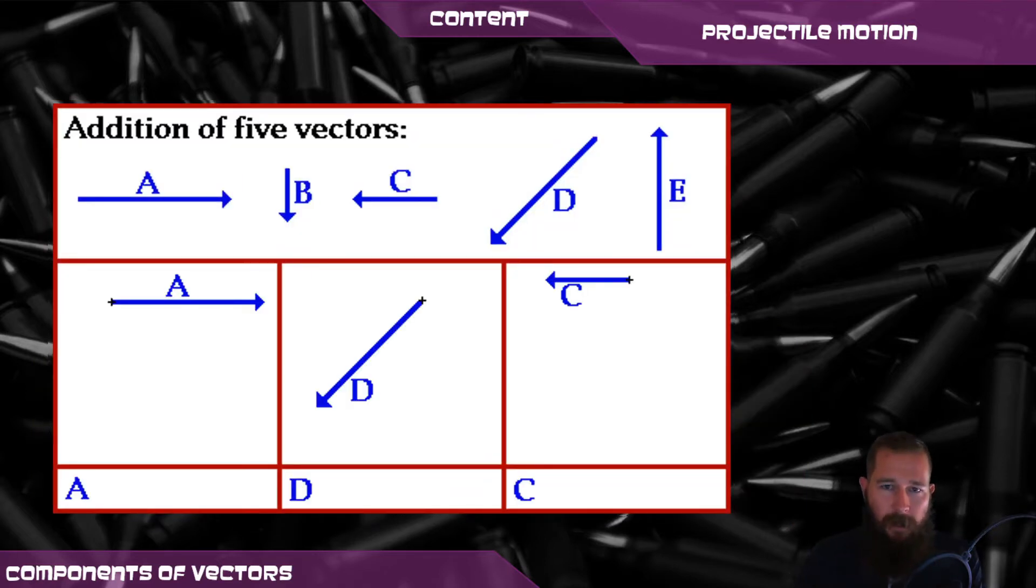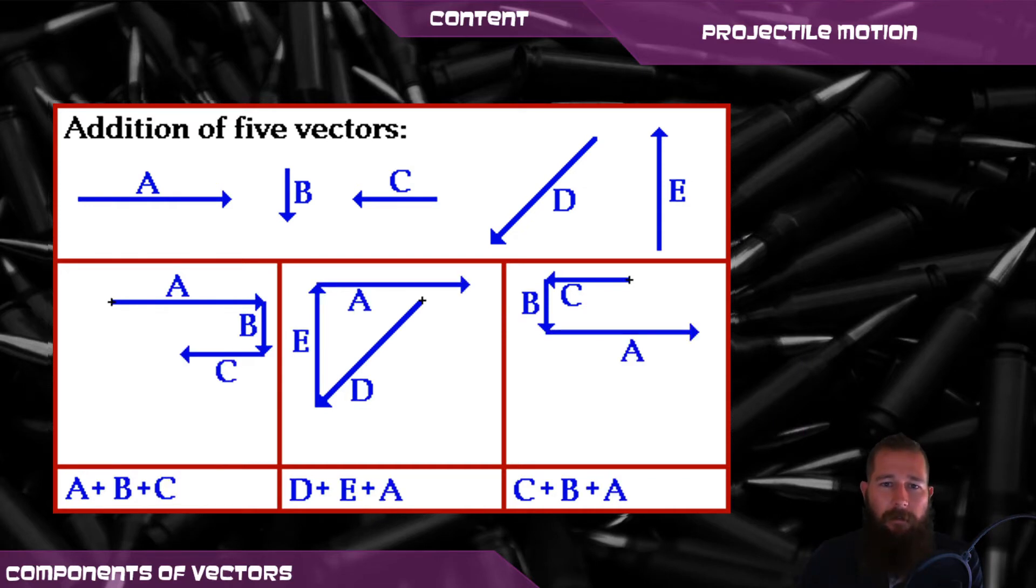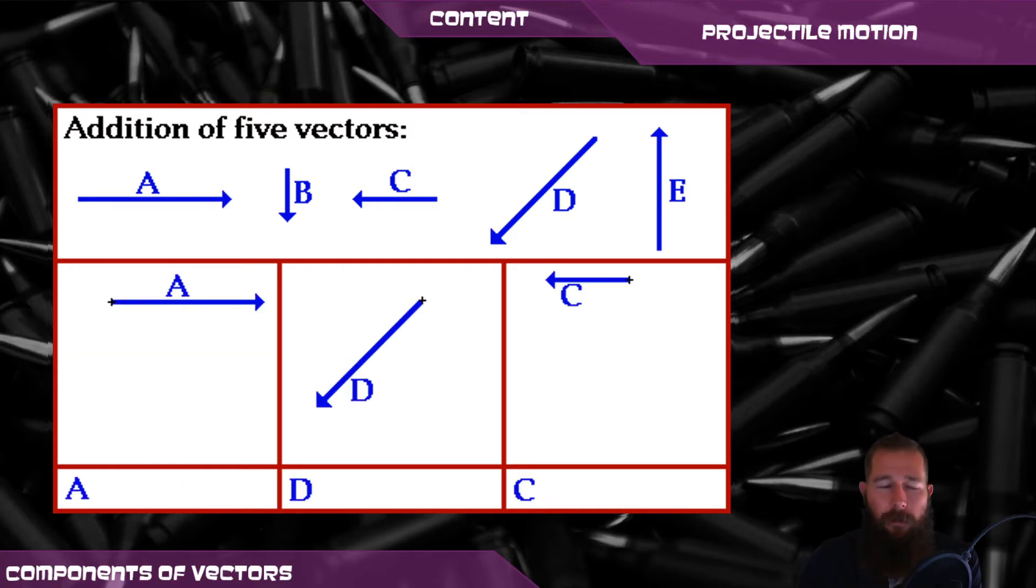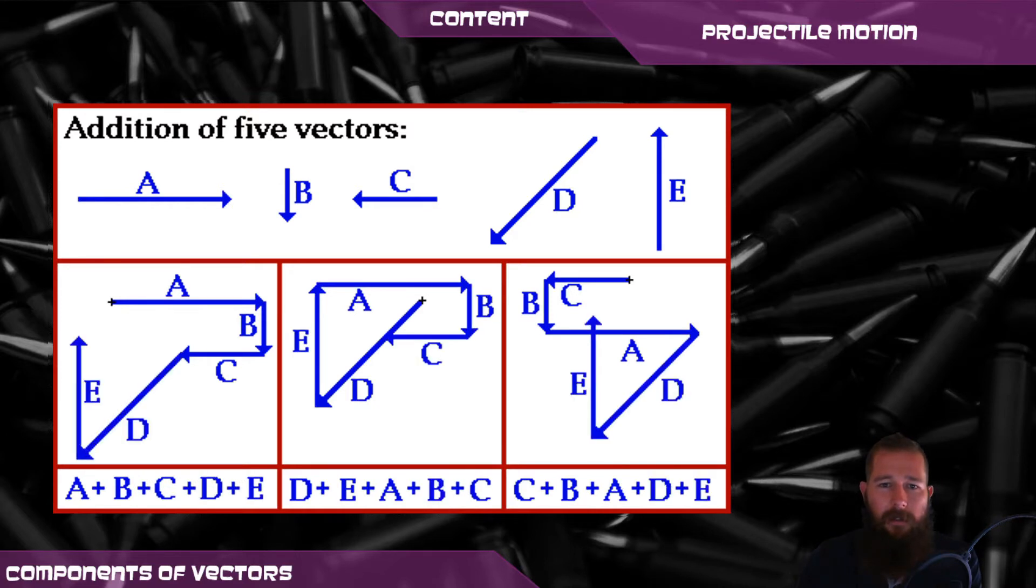I'm just going to let this animation play out, but here we're adding five different vectors. As with traditional addition in mathematics, it doesn't matter what order the addition is performed in, and you can see in each of these three cases, the addition is performed in a different way. However, the result is the same in the end.